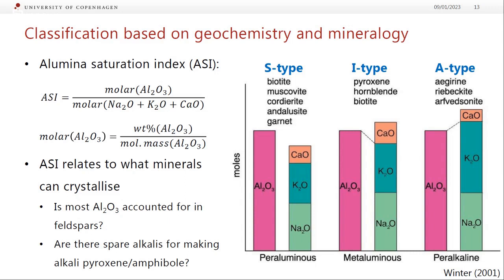The reason this is important is it relates to what minerals crystallize from the granite. Most of the aluminium is accounted for in feldspars. If we have an ASI somewhere in the middle, we could make plagioclase fairly easily — albite is one-to-one, one sodium for every aluminium. If we have more aluminium than that, we need to find another mineral to soak up aluminium, so we start to see more aluminium-rich minerals like biotite, muscovite, cordierite, sillimanite — another aluminosilicate — and garnet. If we have more potassium and sodium than aluminium, we need minerals to take up these excess alkalis — this is where we get weird alkali pyroxenes like aegirine, and alkali amphiboles like riebeckite or arfvedsonite.